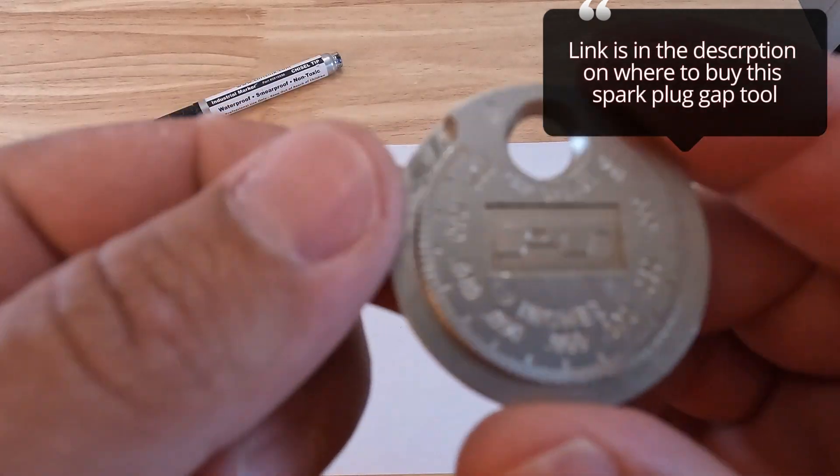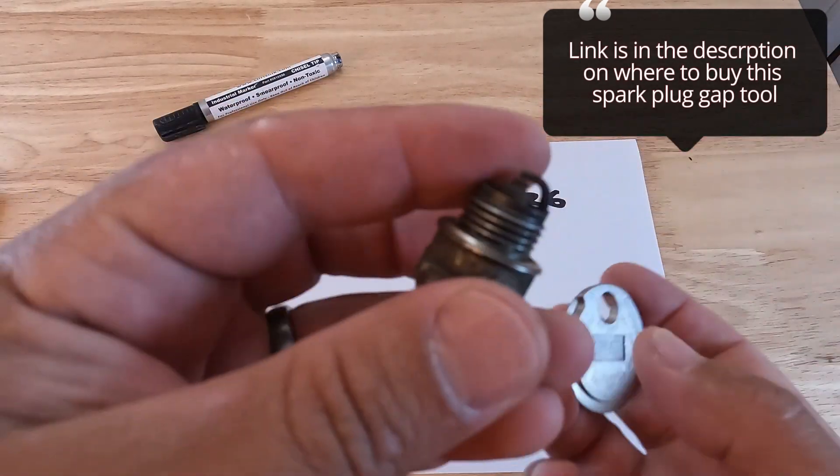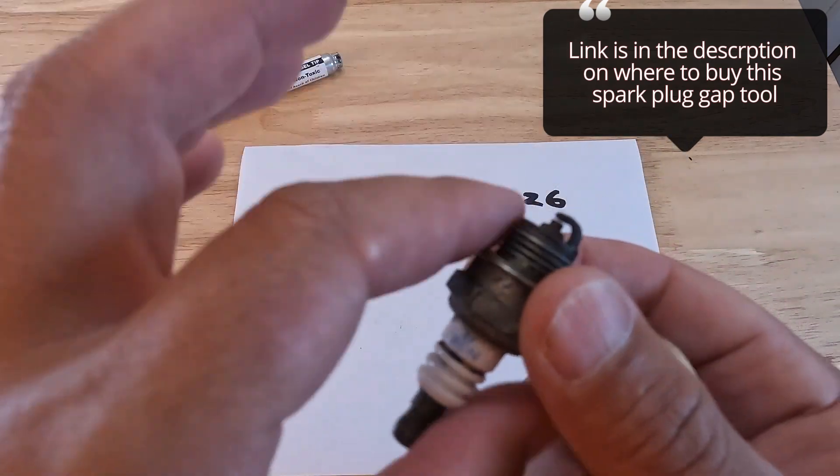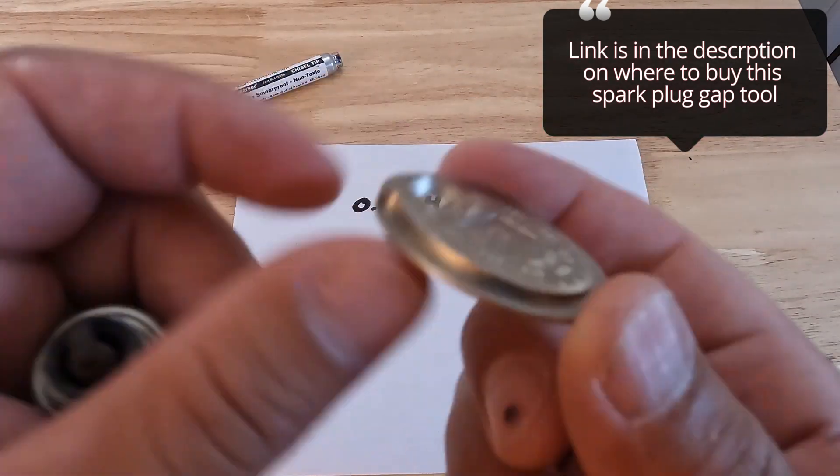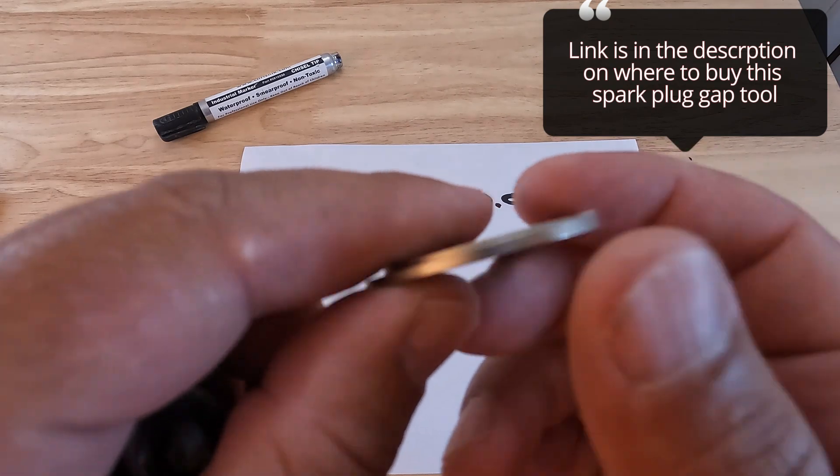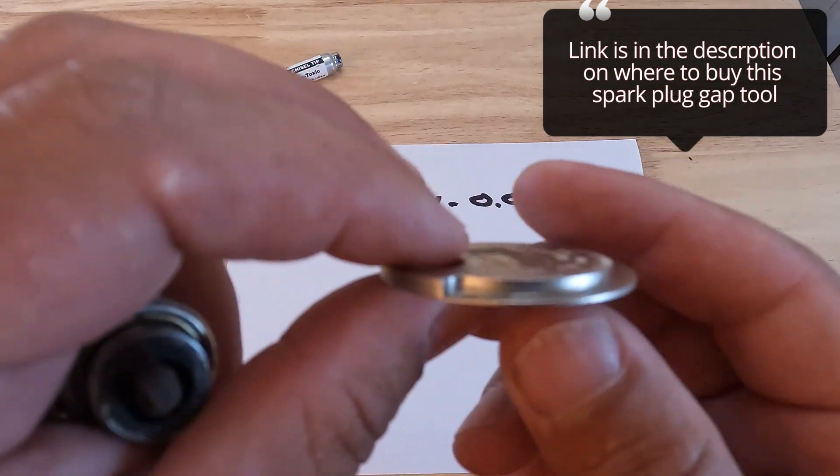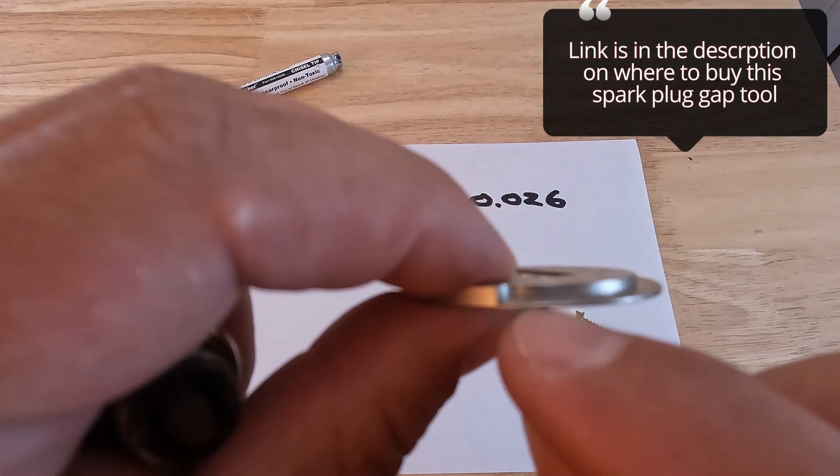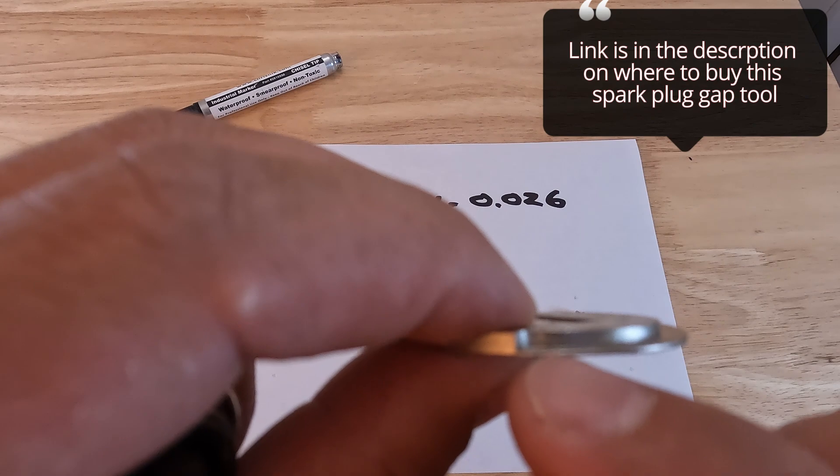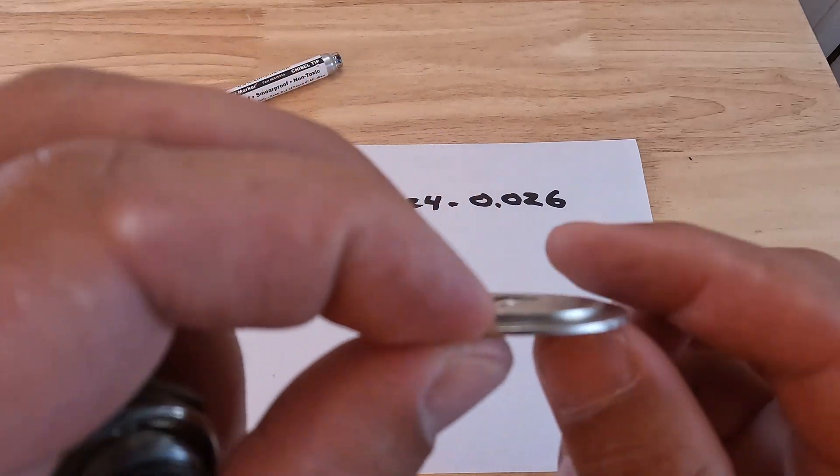So here's our tool that we're going to be using to get the correct gap in our spark plug. This is just a spark plug gap tool and I'll put a link in the description on where you can pick this up. You can see how this works: this end is tapered, this is the narrow end, and then it tapers up, it gets thicker and thicker as you go around.